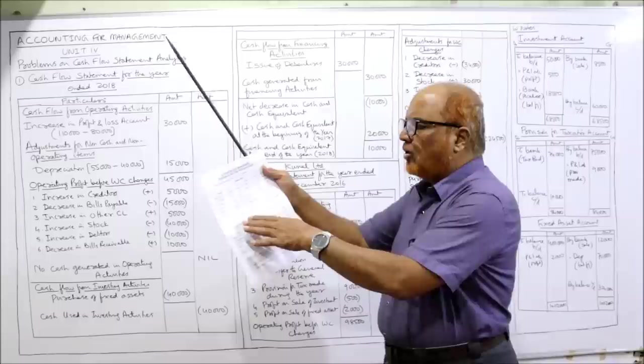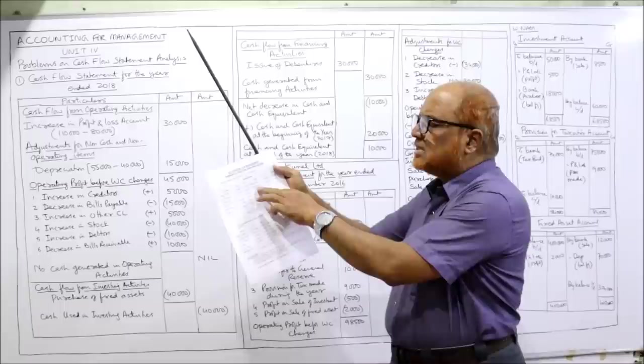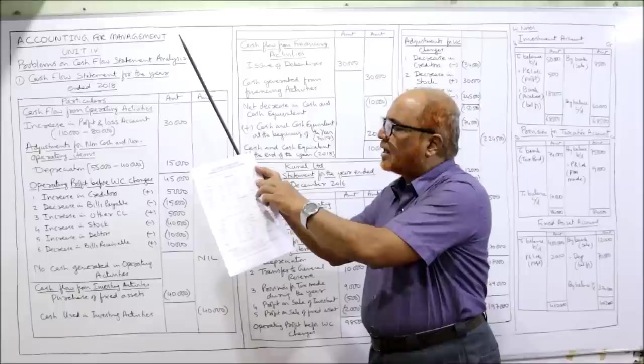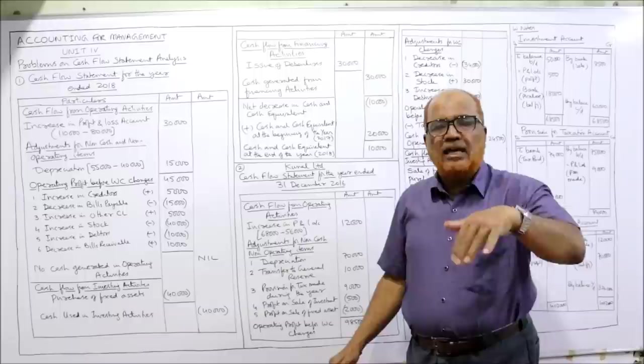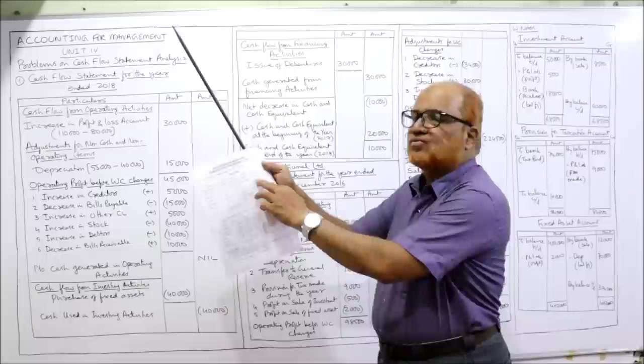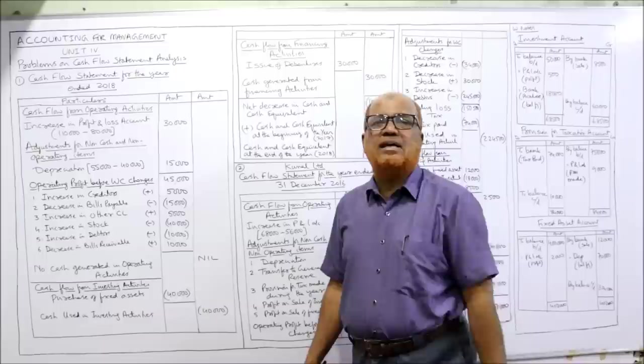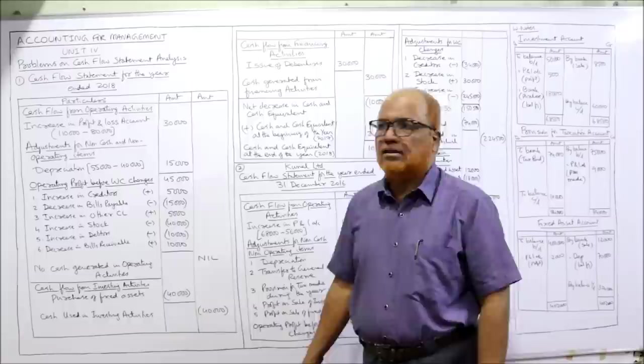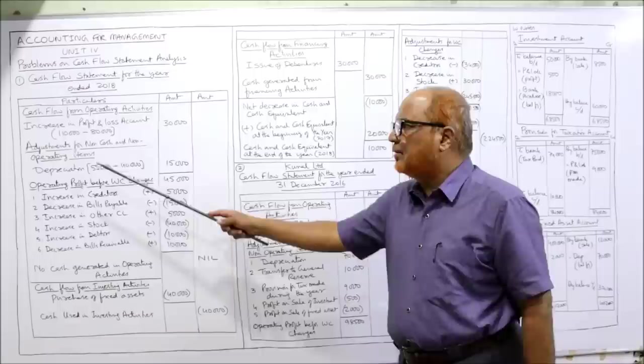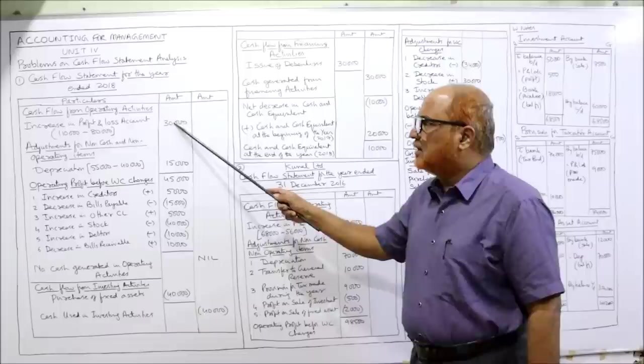In the first problem no adjustments are given, and only depreciation is a non-cash expense. Last year accumulated depreciation 40,000, current year 55,000 — so increase in accumulated depreciation is 15,000. That is 55,000 minus 40,000. The 15,000 is the depreciation provided during 2018. This is the only non-cash item. Adding up: 30,000 plus 15,000 equals 45,000 — this is the operating profit before working capital changes.